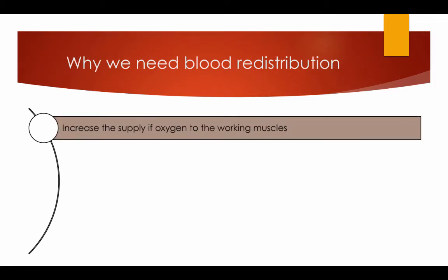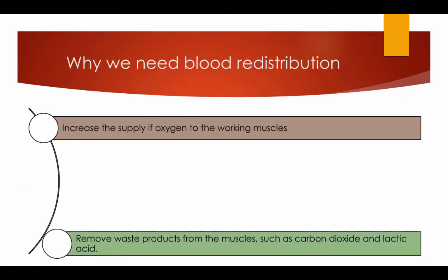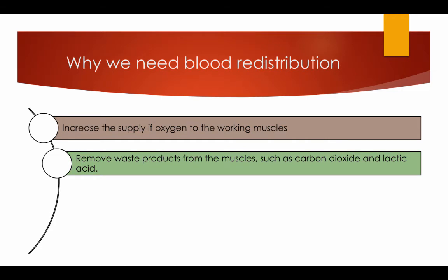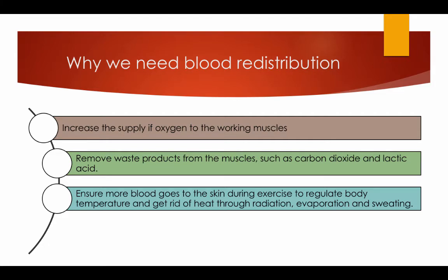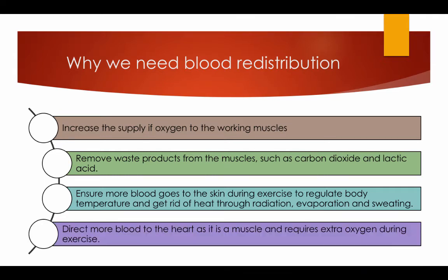Why we need blood redistribution. It increases the supply of oxygen to the working muscles. It removes waste products from the muscles such as carbon dioxide and lactic acid. It ensures more blood goes to the skin during exercise to regulate body temperature and get rid of heat through radiation, evaporation and sweating. It also directs more blood to the heart, which requires extra oxygen during exercise.